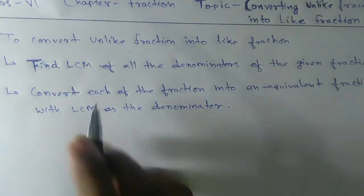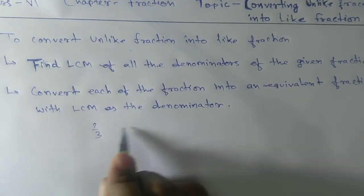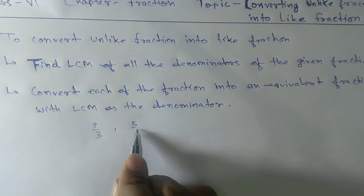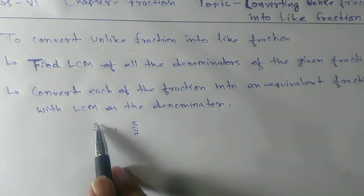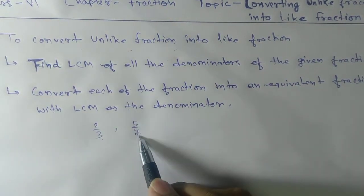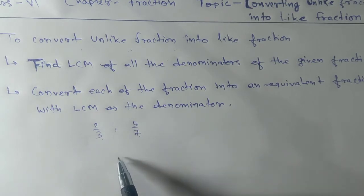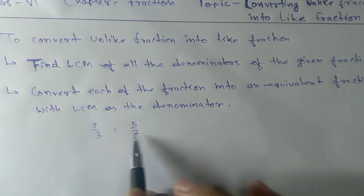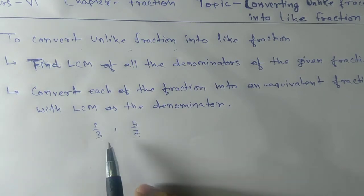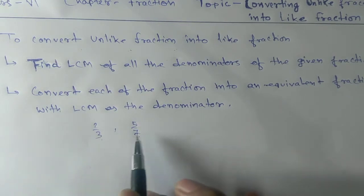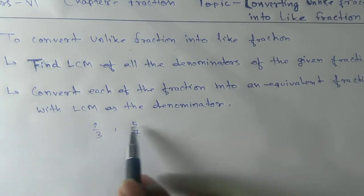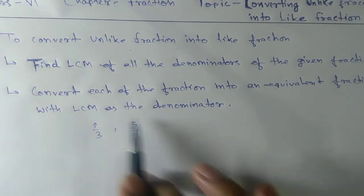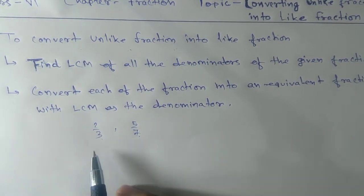Let's understand with the help of an example. If we take 2/3 and 5/7, you can see that these two fractions are different — they are not like fractions. Like fractions are fractions whose denominators are the same.